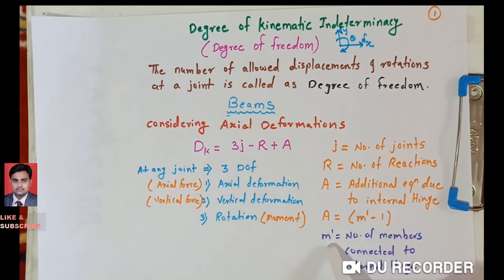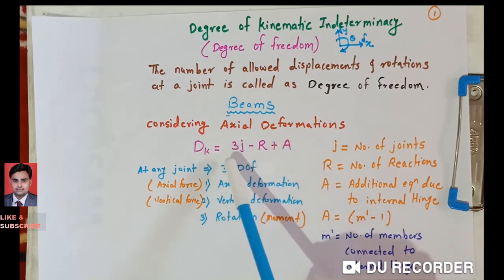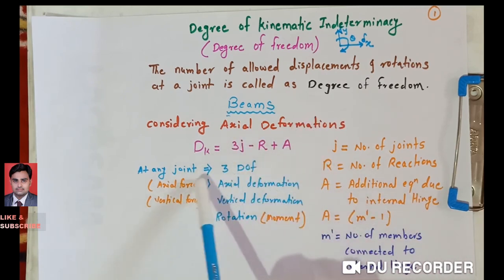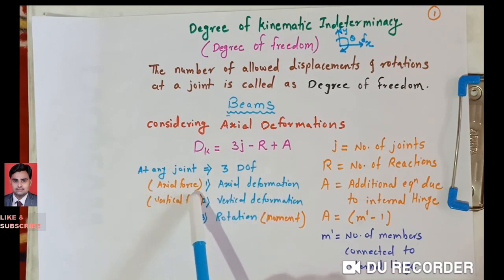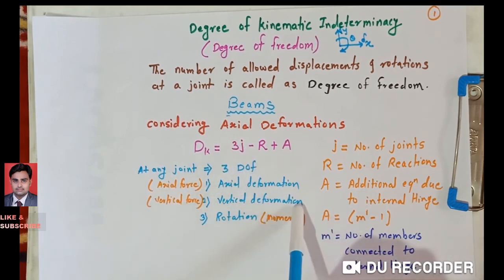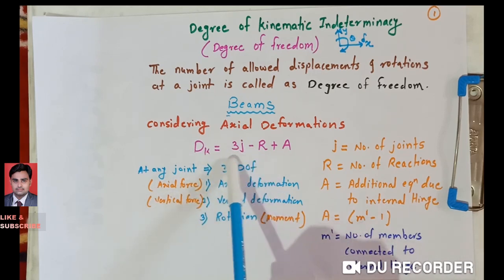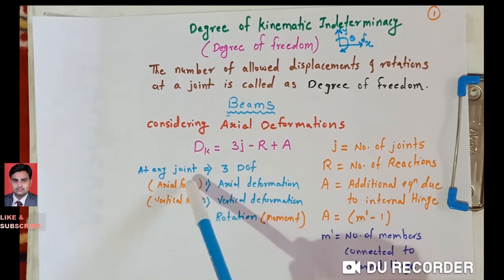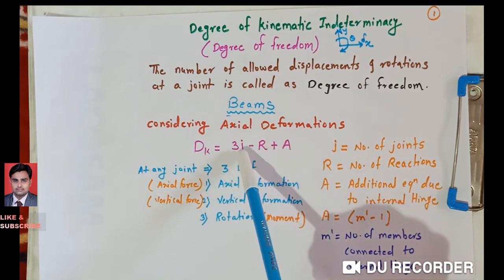A equals m-dash minus 1, where m-dash is the number of members connected to the internal hinge. A only comes into the picture when internal hinges are given; otherwise A = 0. The factor 3 in 3J comes from the three degrees of freedom at each joint: axial deformation, vertical deformation, and rotation. So for J joints, total degrees of freedom are 3J.